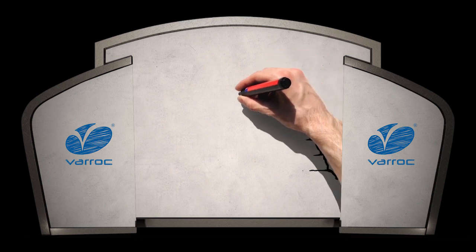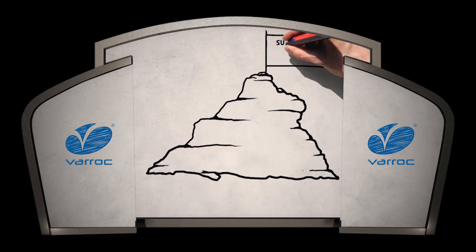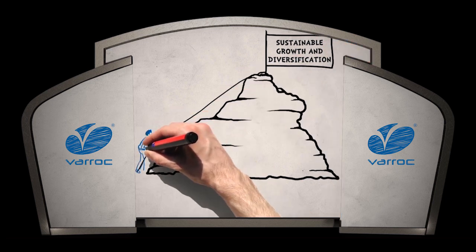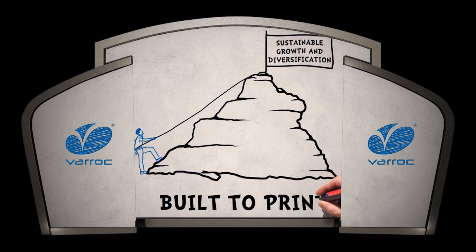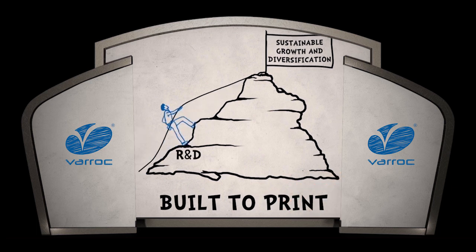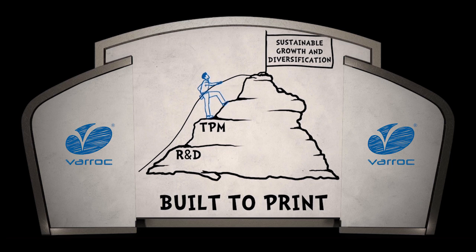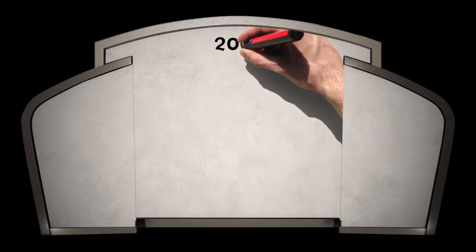The second decade saw the themes of sustainable growth and diversification intensify. Varok focused on moving up the value chain by becoming less build-to-print, invested in R&D, launched the TPM initiative, and continued adding more product lines in the domestic business.